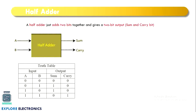Now let us understand the half adder functionality. This is the block diagram of the half adder. The two inputs are A and B, and the outputs are sum and carry. If we assign values for A and B, the different combinations we can take are: A=0, B=0; A=0, B=1; A=1, B=0; and A=1, B=1.